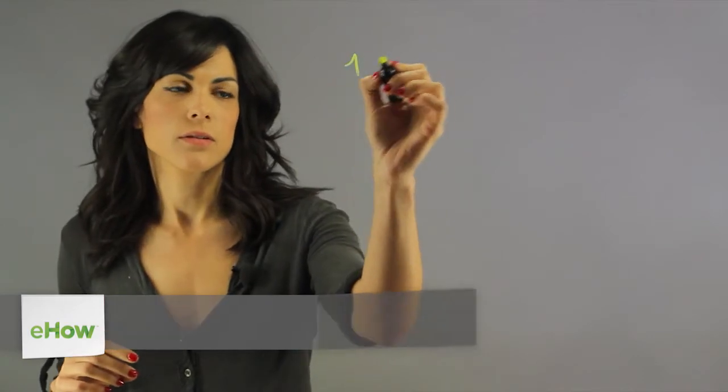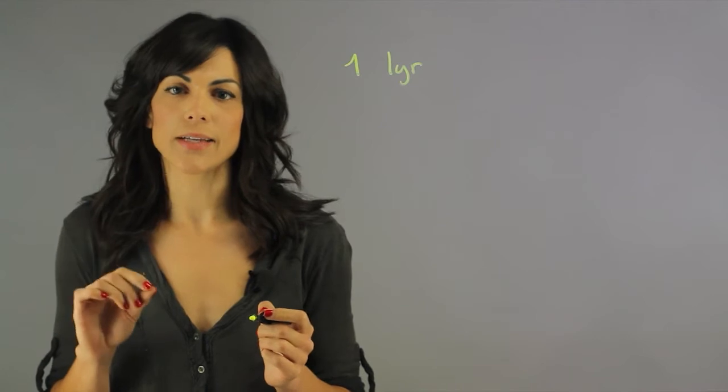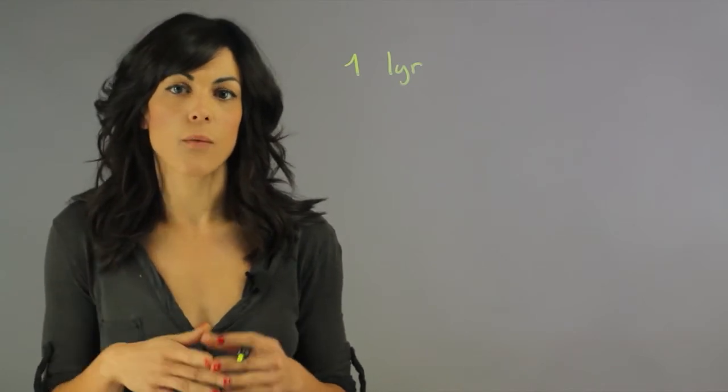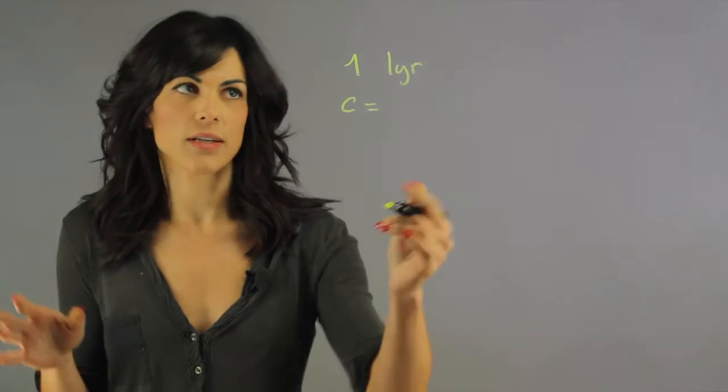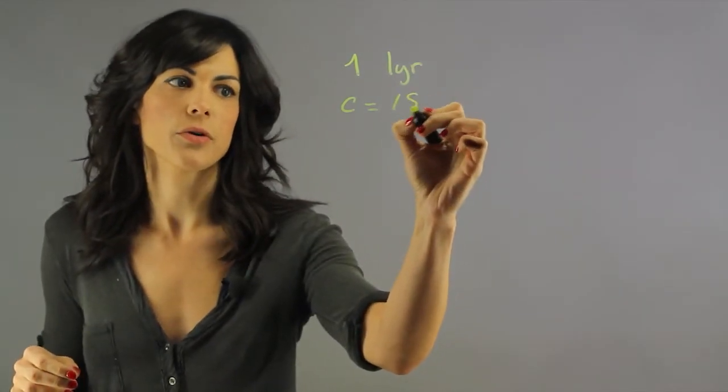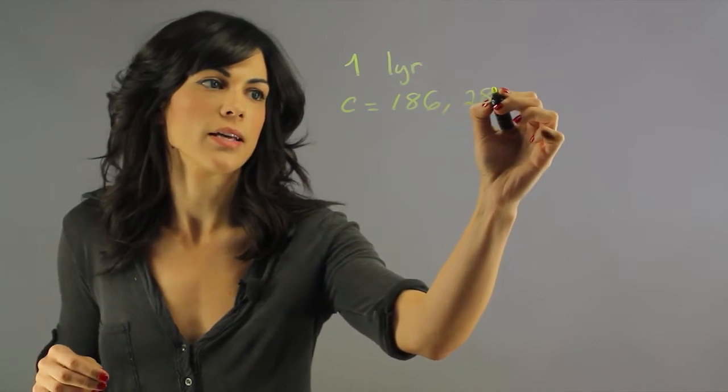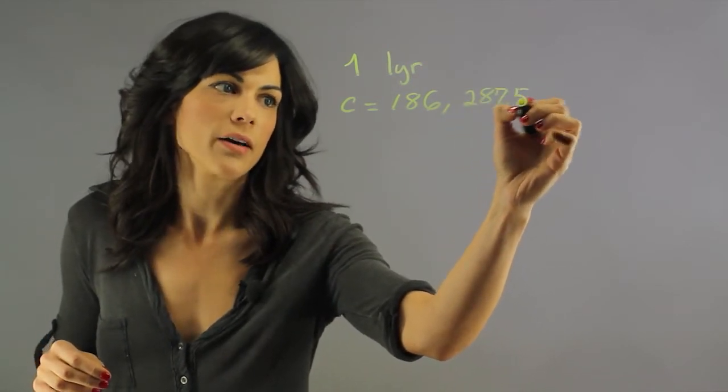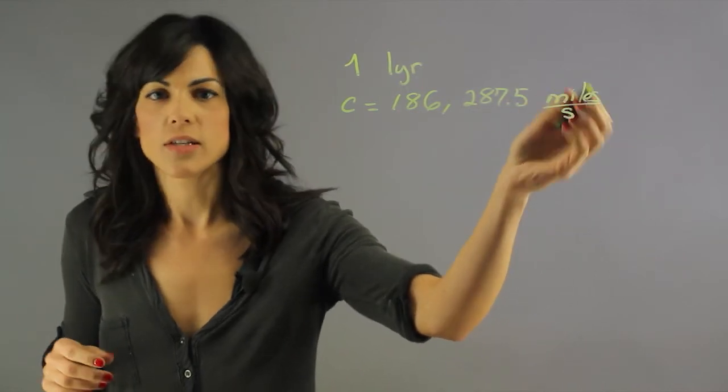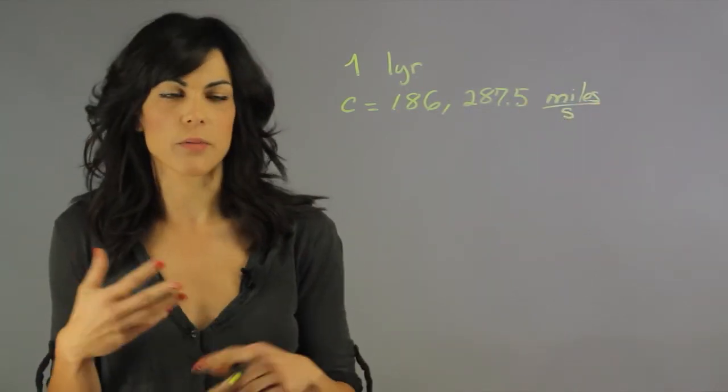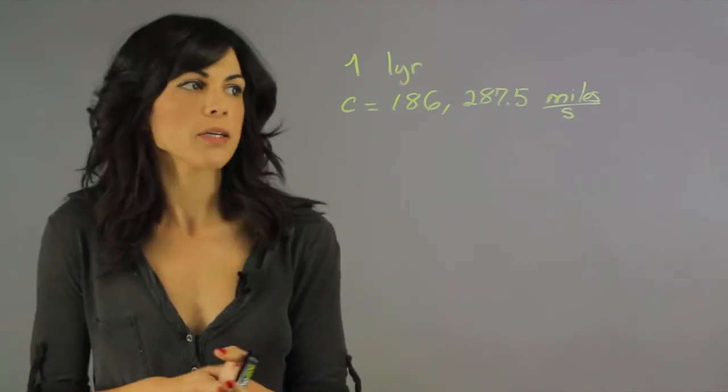One light year is the distance that light travels in a year. Now, what is the speed of light? I will try to do this as accurate as possible, so I kind of show you the steps. It's 186,287.5 miles per second. You can change this to meters, to kilometers, whatever you really want to work with. I will do this just for the general public.